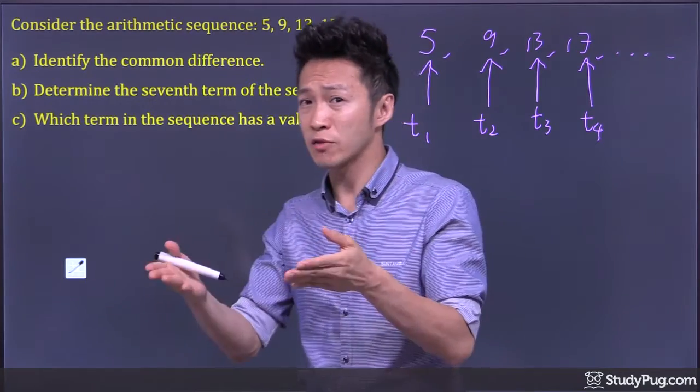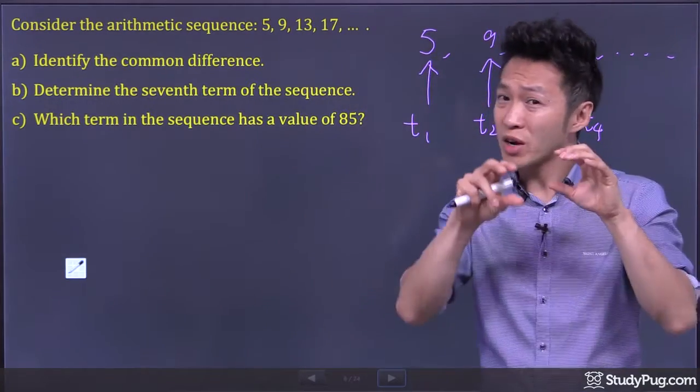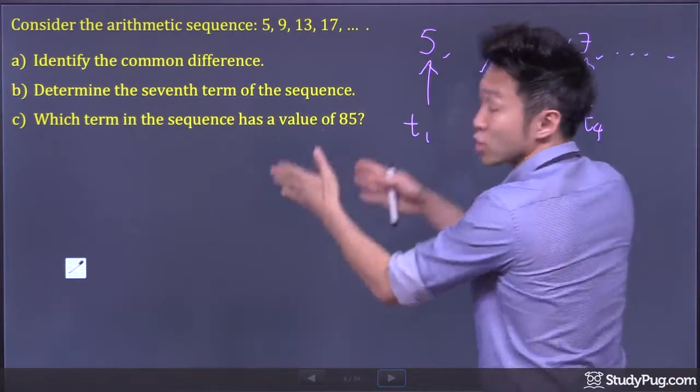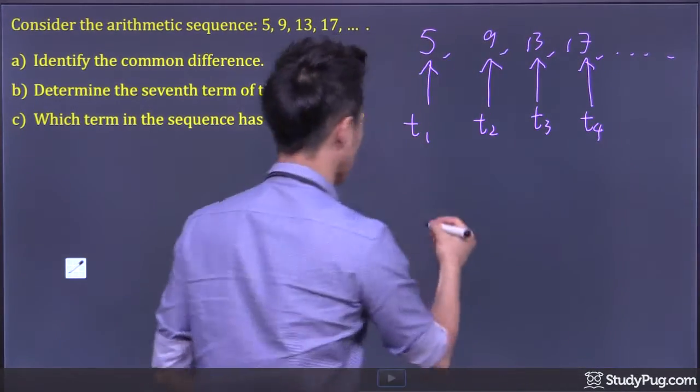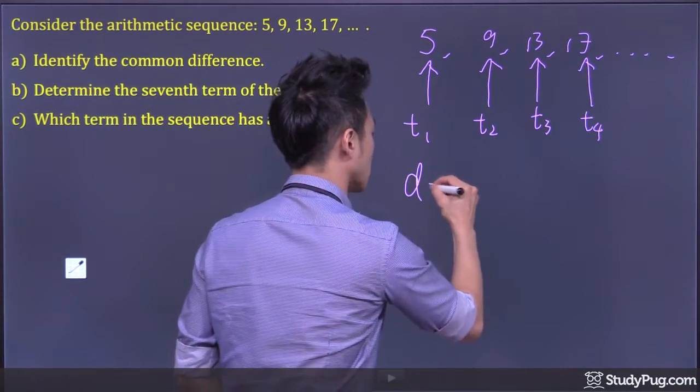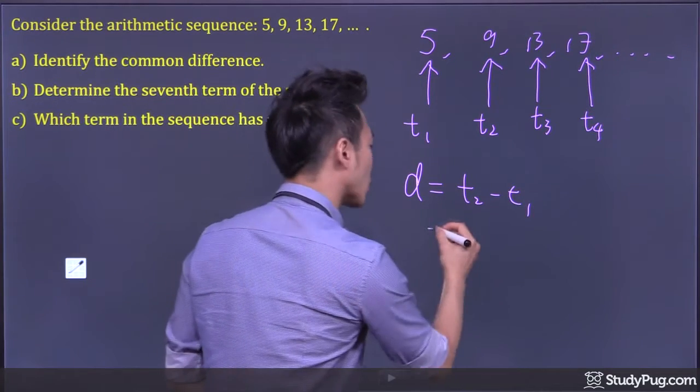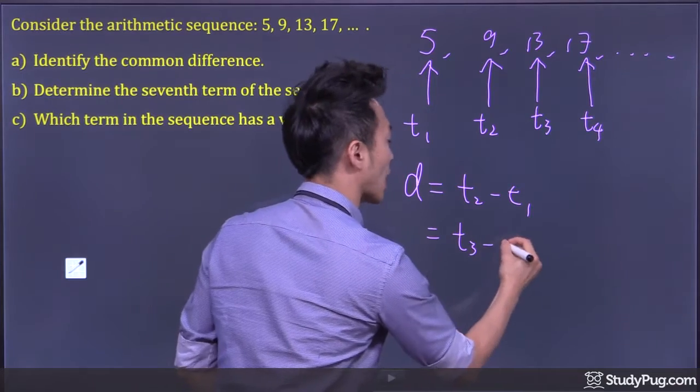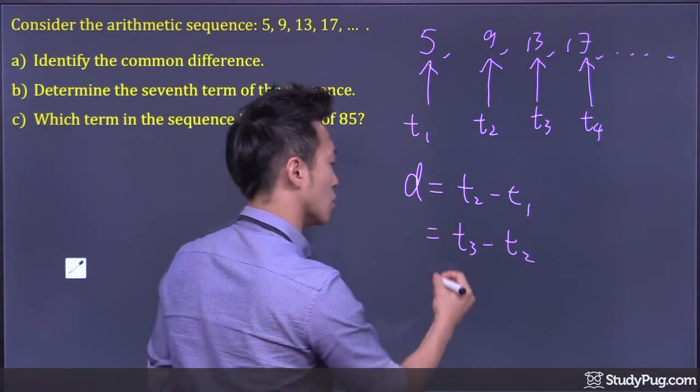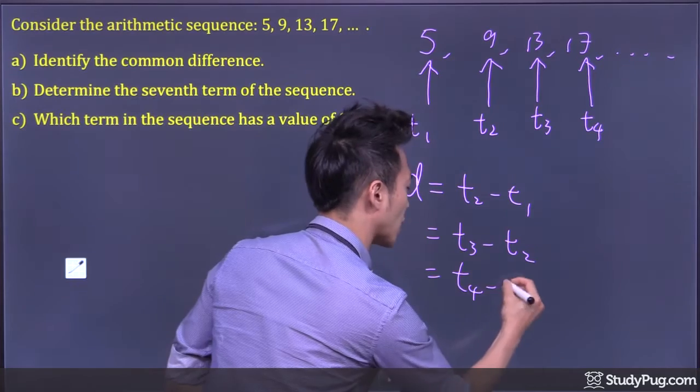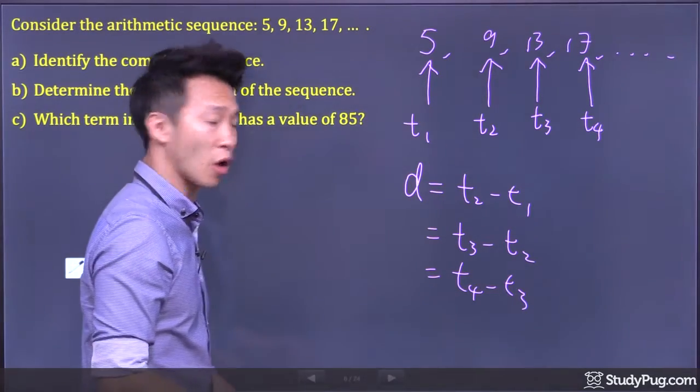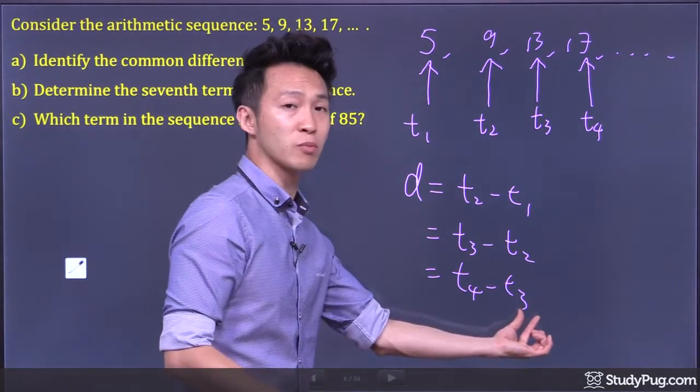And the common difference is equal to one term subtracting the term before it. So for example, to find a common difference, we can go term 2 minus term 1, or we can go term 3 minus the term before 3 which is term 2, or we can go term 4 minus term 3. Always one term minus the term before it.